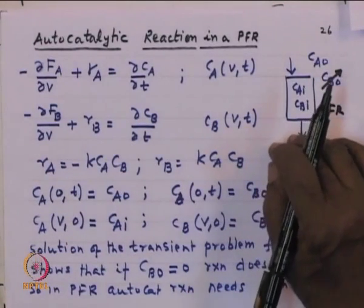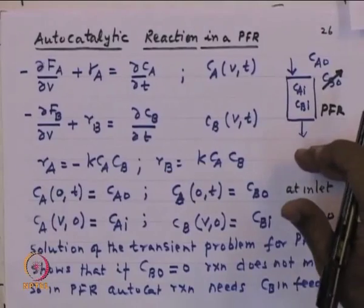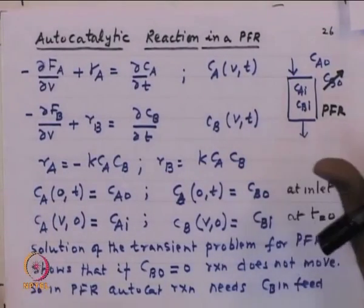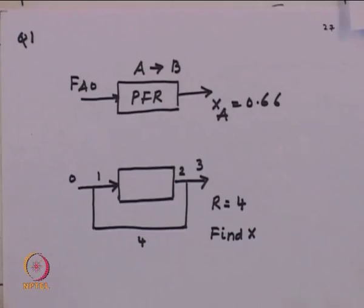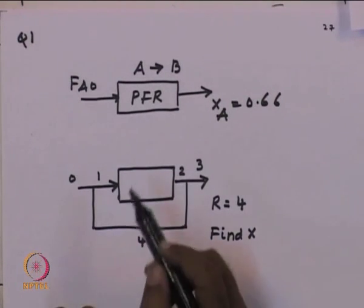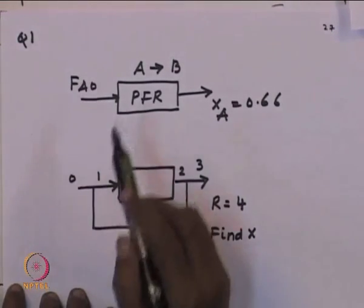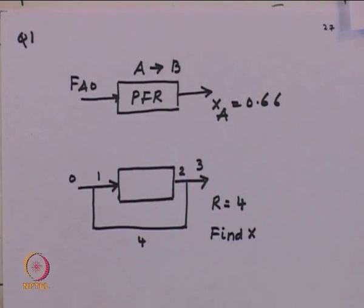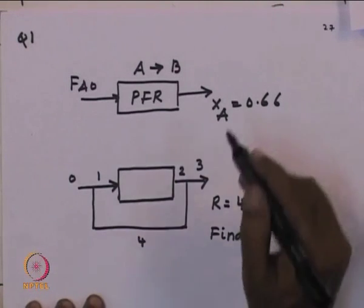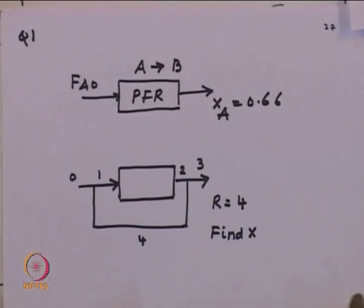In a CSTR, an autocatalytic reaction always goes forward, while in a PFR, the autocatalytic reaction does not proceed because there is no product present. With this, let us look at one or two small numerical examples to understand how the numbers look. The exercise is: there is a PFR in which reaction A goes to B is taking place, and experimentally you find a conversion of 0.66.